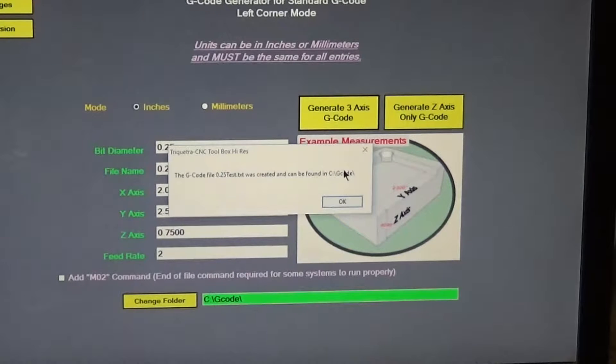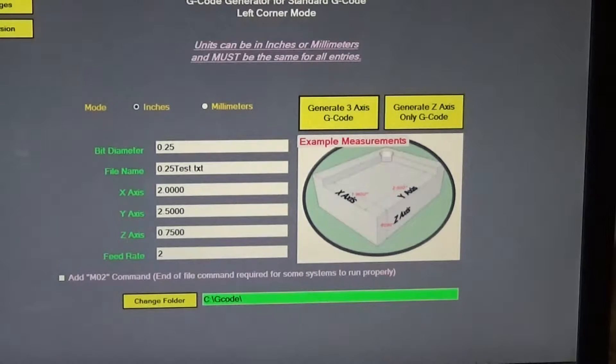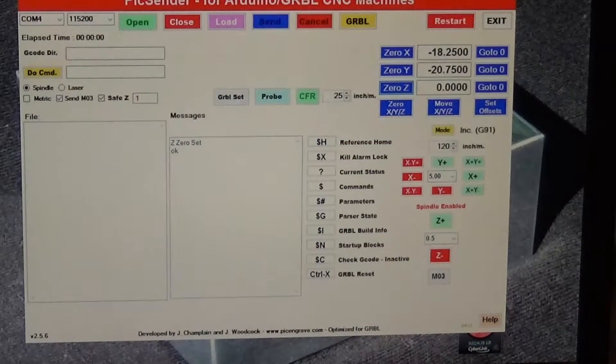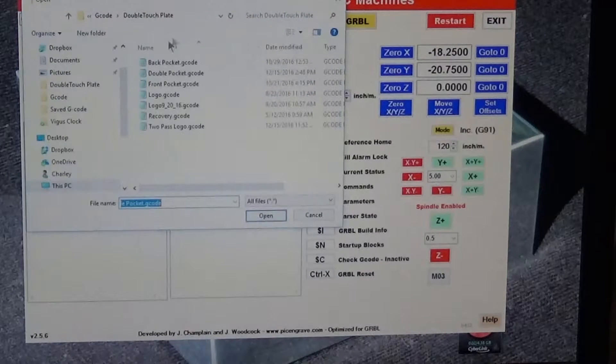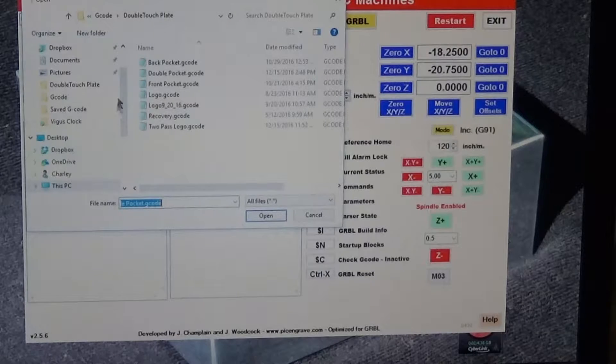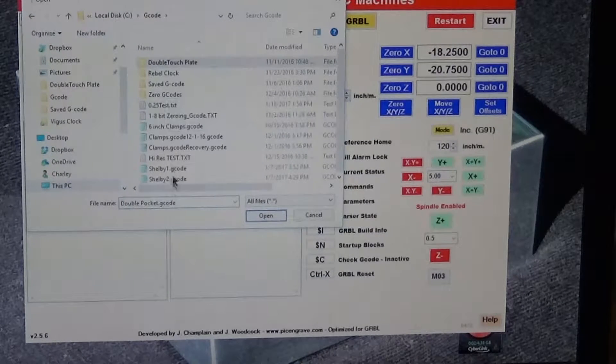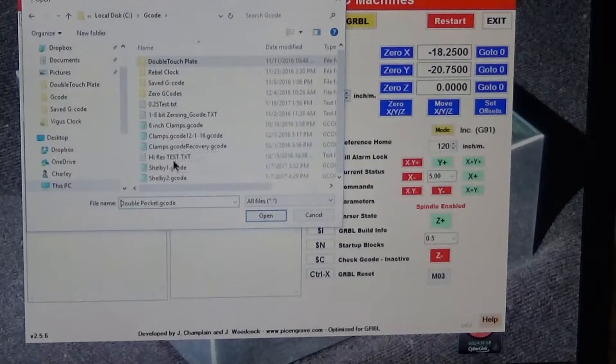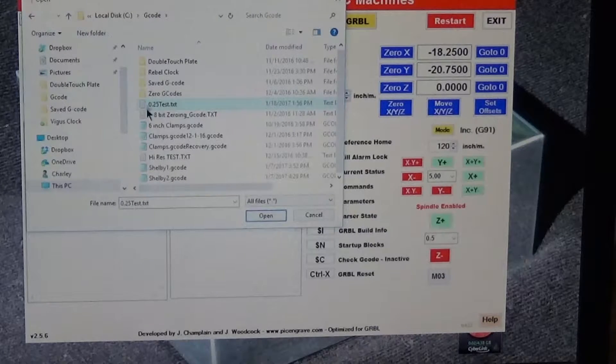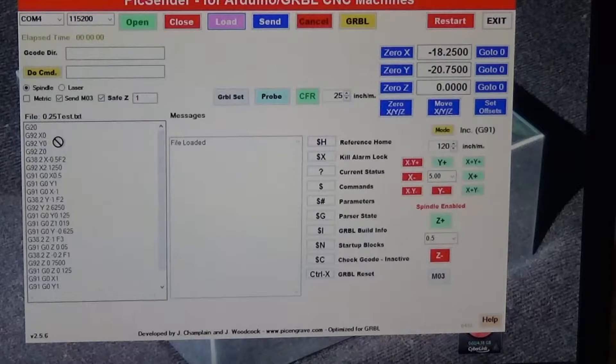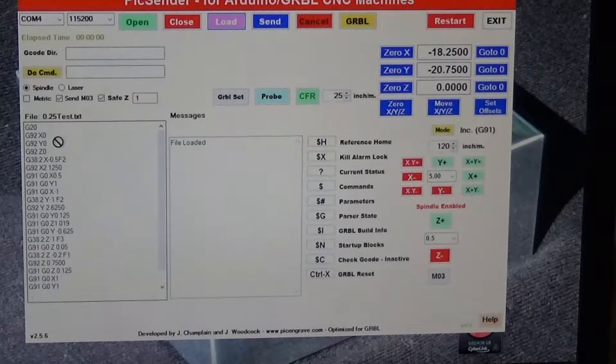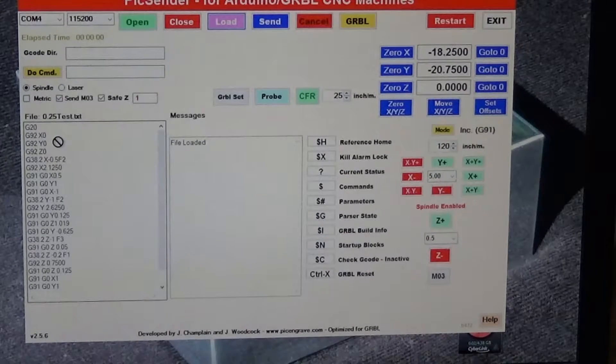I'm just going to minimize the screen. I've got Pics Sender loaded up here, which is my favorite program to use. I'm going to click load and go to my C drive g-code folder, which just happens to be right there. I'm looking for 0.25 test text, which is right there, and I'm going to open it. So now the file is loaded and ready to run. Let me reposition the camera and we'll see what we get out of this.